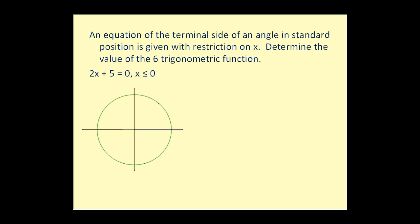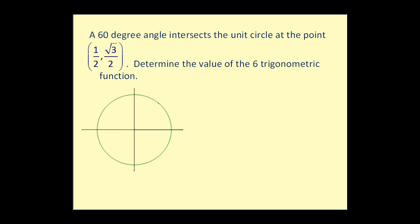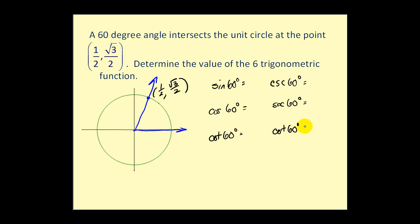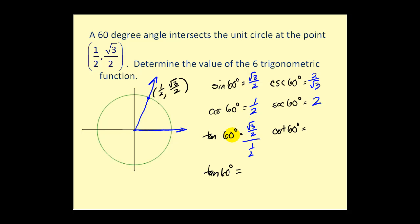A 60-degree angle intersects the unit circle at the point (1/2, √3/2). Since it's the unit circle, sine 60° equals the y-coordinate: √3/2. Cosecant 60° is the reciprocal: 2/√3. Cosine 60° equals the x-coordinate: 1/2. Secant 60° is the reciprocal: 2. Tangent 60° equals y over x: (√3/2) divided by (1/2), which simplifies to √3. Cotangent 60° is the reciprocal: 1/√3, which may need to be rationalized.